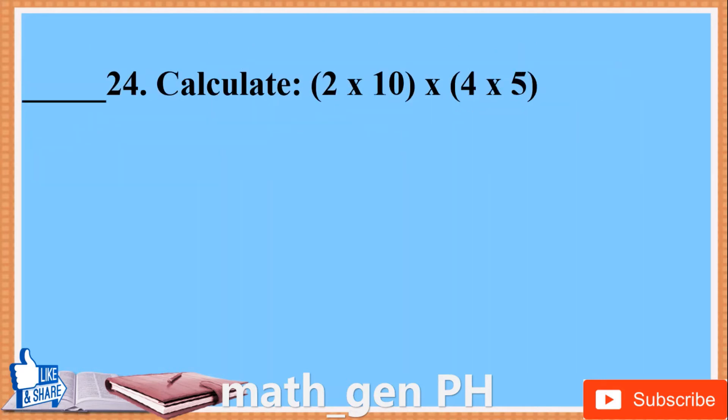Number 24. Calculate: (2 times 10) times (4 times 5).